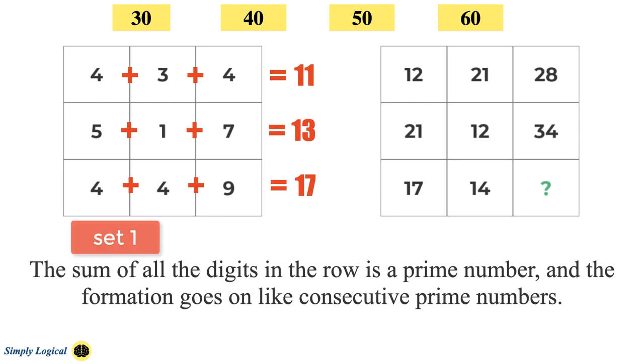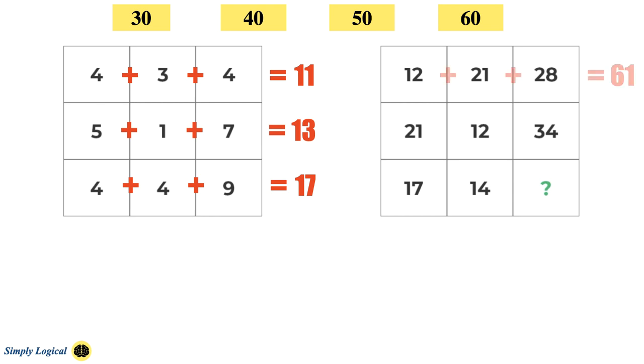So let us apply the same logic to find the missing number in the second set. In second set, sum of all the numbers in first row is 12 plus 21 plus 28 which is equal to 61. And sum of all numbers in second row is 21 plus 12 plus 34 which is equal to 67. So now 61 and 67 are consecutive prime numbers, and the next prime number after 67 is 71.